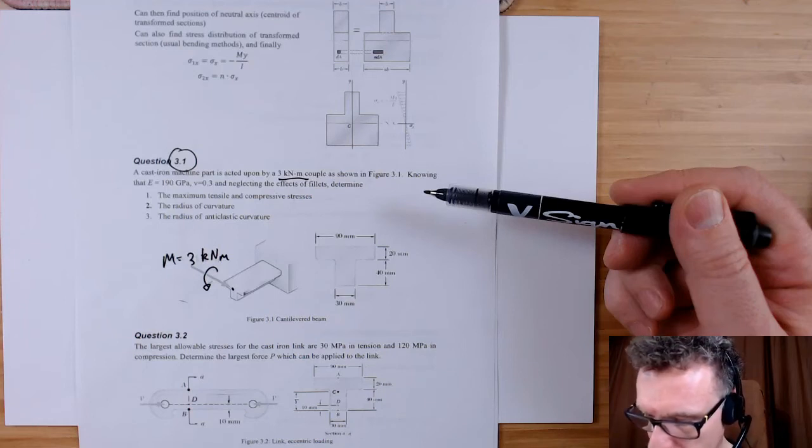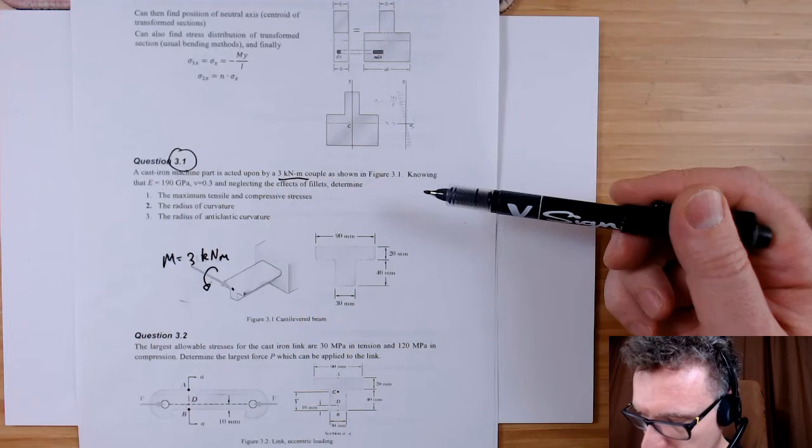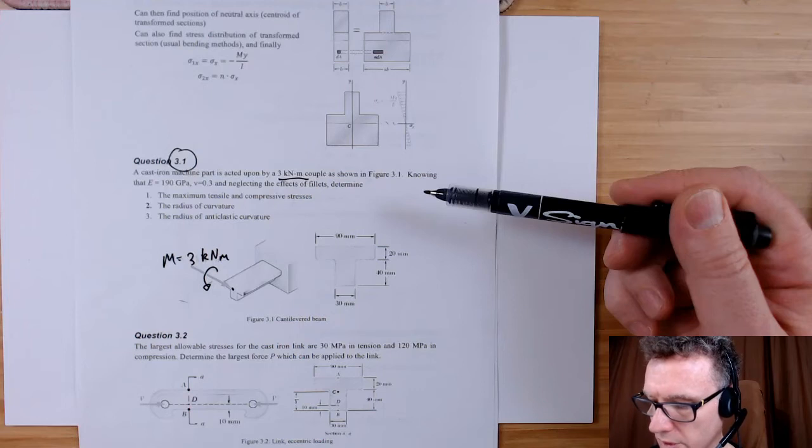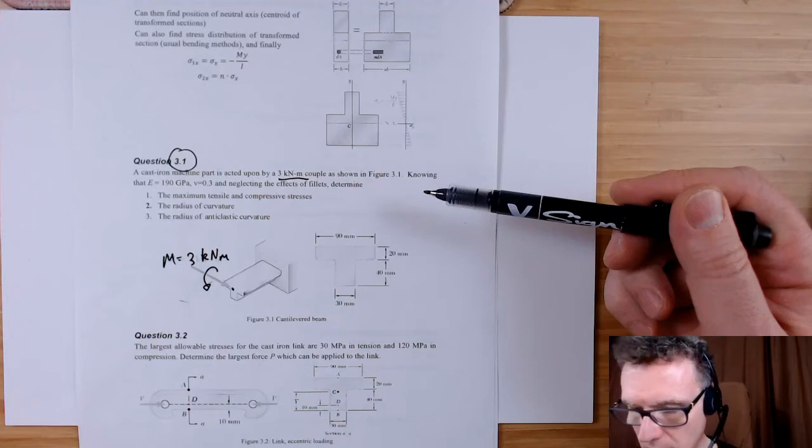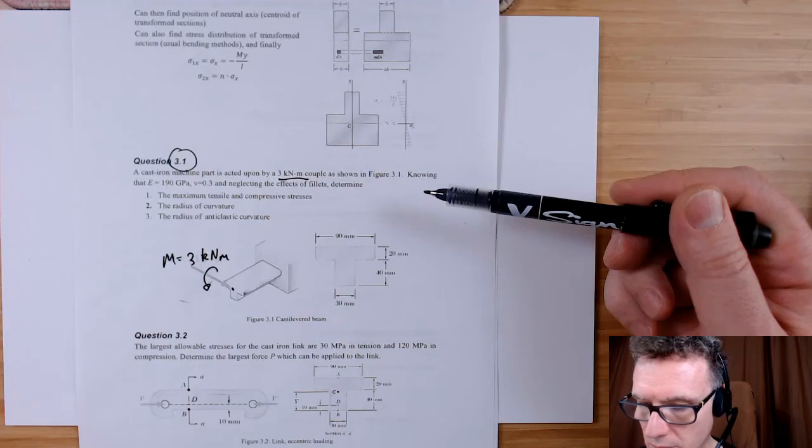The M is 3,000, Y is 22 times 10 to the minus 3, and the I is 868 times 10 to the minus 9, to take off 12 to make that minus 9, so in SI units. 3,000 times 22 times 10 to the minus 3 over 868, so that's 76 megapascals, and that's a positive, that's a tension.